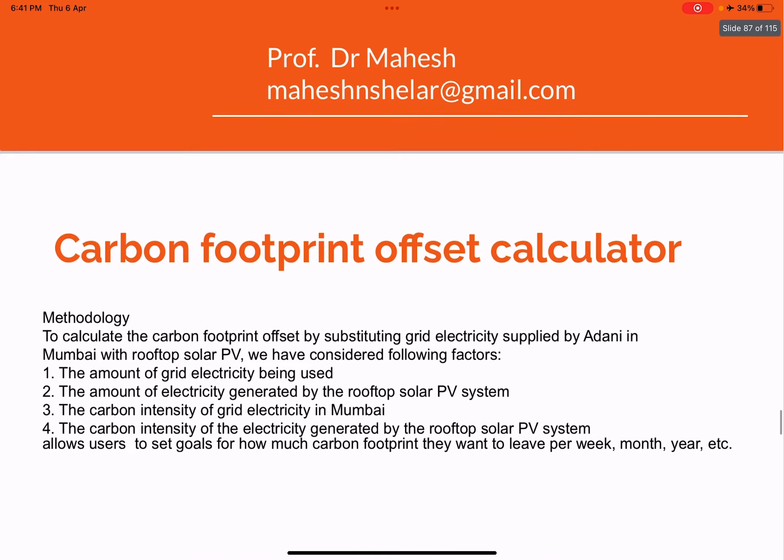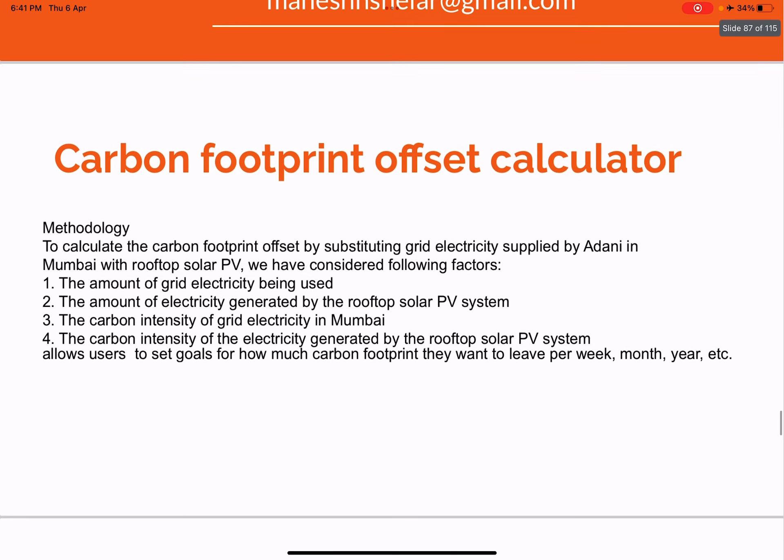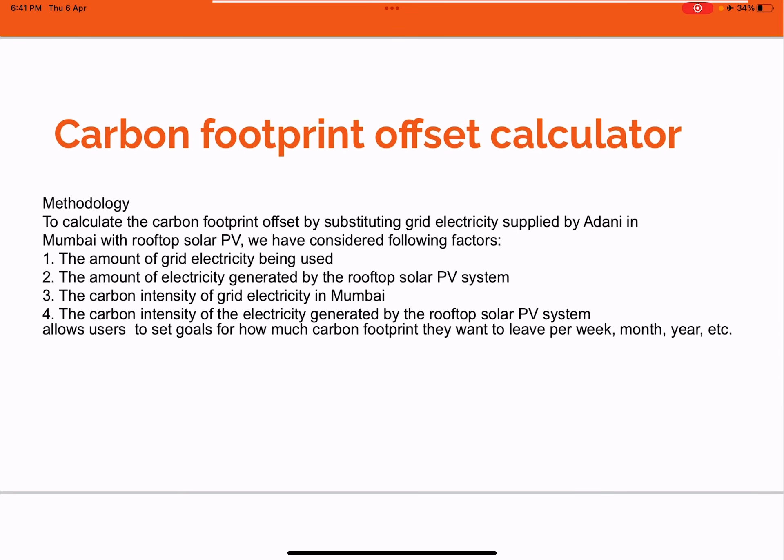As an example, I've taken the Mumbai region of India where electricity is supplied from the grid. The grid electricity is majorly from fossil fuel-based power plants, specifically coal-based. The idea is to calculate the reduction in carbon footprint by substituting grid electricity with a rooftop solar photovoltaic system, which is a renewable energy system.